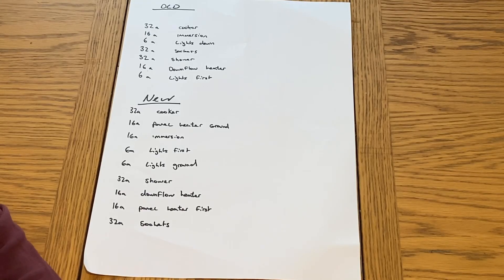In today's video we're going to be looking at maximum demand and diversity. The method we're going to use is from the on-site guide and guidance notes three. It's actually quite a nice easy method in most cases just to give us a general idea of what the maximum demand is.